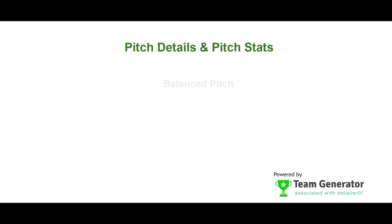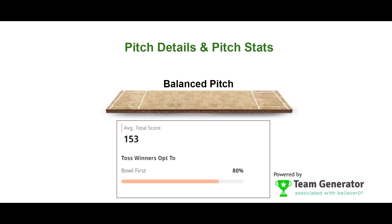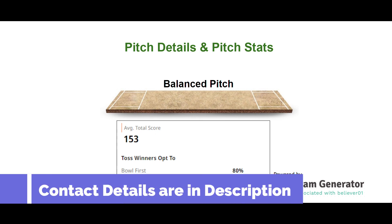Regarding today's pitch, it will be a balanced pitch, favorable for both batsmen and bowlers. The average score will be 153, meaning we can expect anything around 300-plus runs across 40 overs.